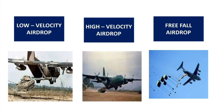In a high velocity airdrop, this type is meant to stabilize the fall. The parachute slows the container, but not to the extent of a low velocity airdrop. This method is used in delivering military ready-to-eat meals.